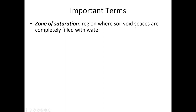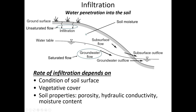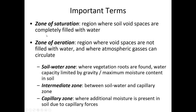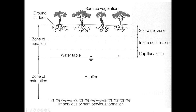Going over some terms from the handout: the zone of saturation is another word for the aquifer itself — where all voids are full of water, beneath the water table. The zone of aeration is where some voids have water and some have air. That breaks into sub-areas: the soil water zone close to the surface, the capillary zone very close to the water table where water content increases due to capillary effect, and the intermediate zone in between.